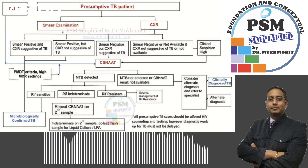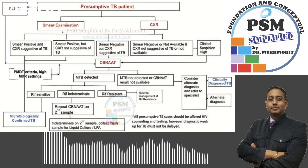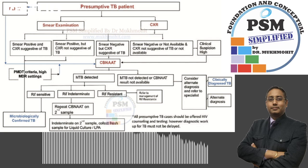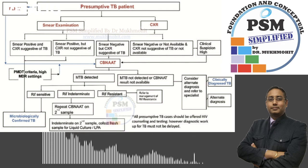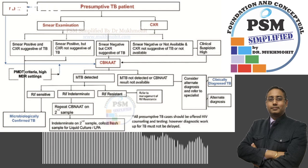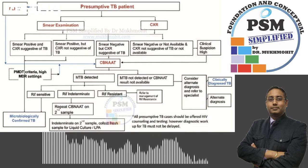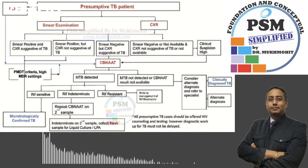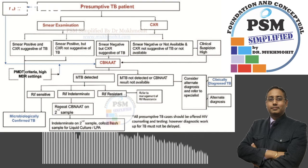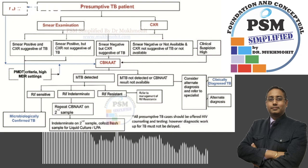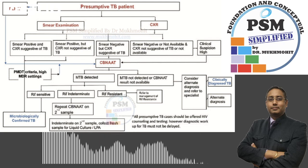If the CB-NAAT suggests rifampicin sensitive, the second sample is sent to first-line LPA to look for isoniazid resistance or any other poly-drug resistance. In case there is isoniazid resistance or other drug resistance, they are managed accordingly according to the DR-TB (drug-resistant TB) guidelines.